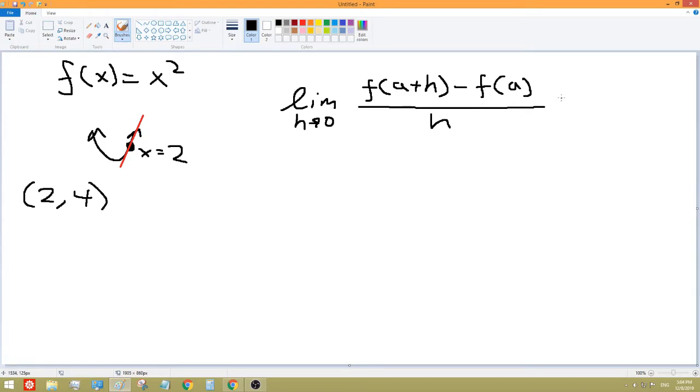So then that would be equal to, also remember to always write the limit sign on the left side. You might get points deducted for that on a test or something. So limit as H approaches zero, and now we'd use our function. So A plus H would be X here. So it would be A plus H squared minus A squared. Because A is alone there, A would be equal to X. So all over H.